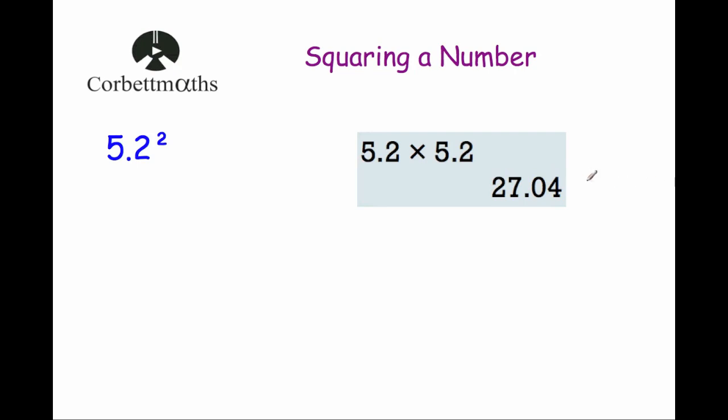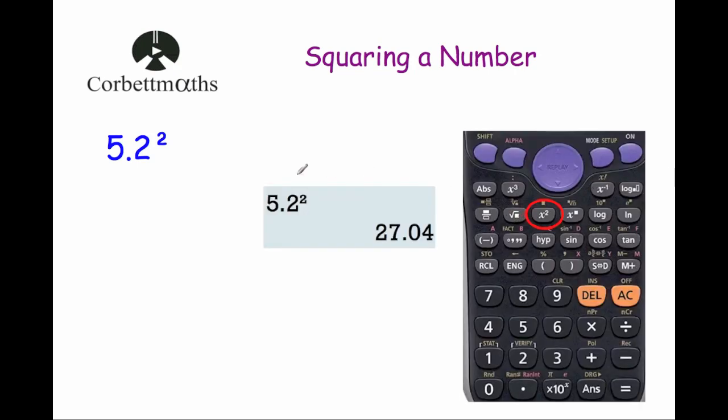Alternatively, another way you could do it is to use the squared button. You would type in 5.2 on your calculator, and on your calculator there'll be a squared button.